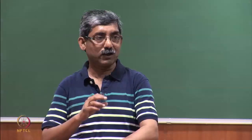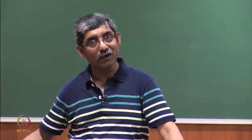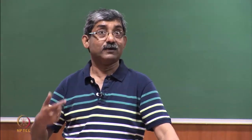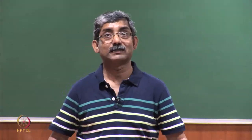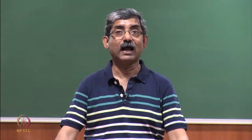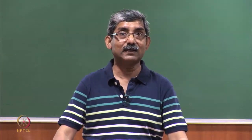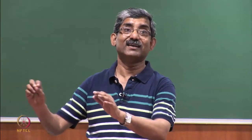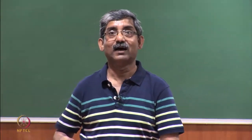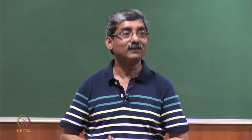These six locations were selected because a particular fabric may give a particular prickle sensation in one place but a different prickle sensation in another. None of these regions is a glabrous zone — all are hairy skin areas where we normally get prickle sensation.